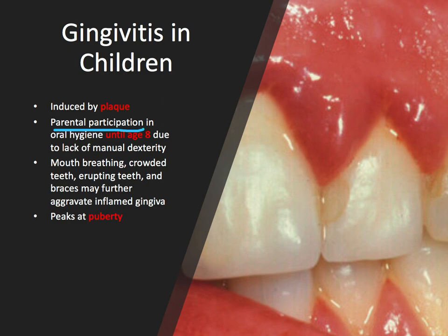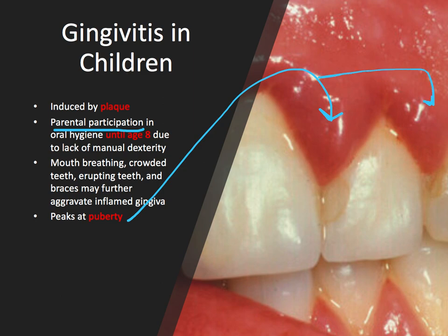As we can see here, gingivitis, like caries, is multifactorial — many factors are playing a role. It's thought that hormones can play a role in exacerbating the body's response to plaque. The term puberty gingivitis refers to enlarged bulbous interproximal gingival tissue on the labial aspects of the anterior teeth. You can really appreciate that in this image — these inflamed bulbous papilla, particularly in the anterior. This gingival irritation and inflammation often peaks at puberty, and it's thought to be related to hormones.